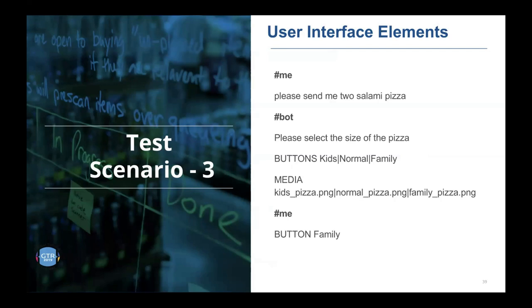For bots that give buttons and links - like 'How may I help you? Check PNR or Cancel' - you handle them in Botium by using the keyword 'BUTTONS' followed by button names, and 'MEDIA' with the image or link name, and 'LINK' followed by the expected URL. In the '#me' section, if you want to click a button, use 'BUTTON' followed by the button name. This is how you interact with any UI elements in Botium - the input/output mechanism remains the same, only the content changes.